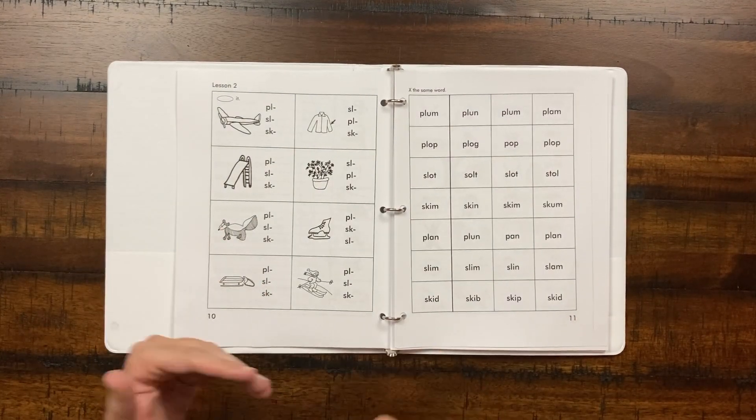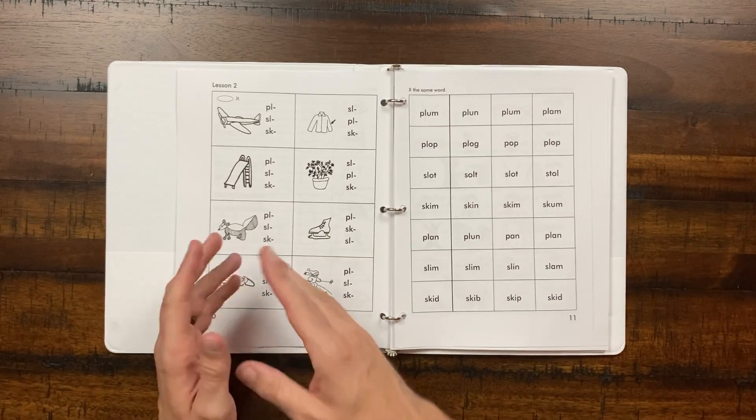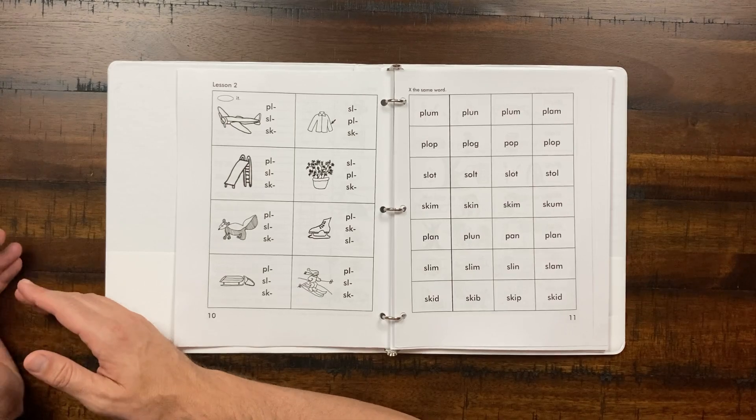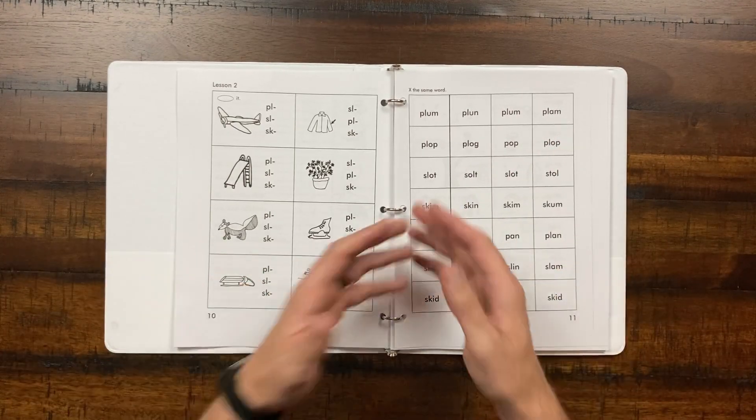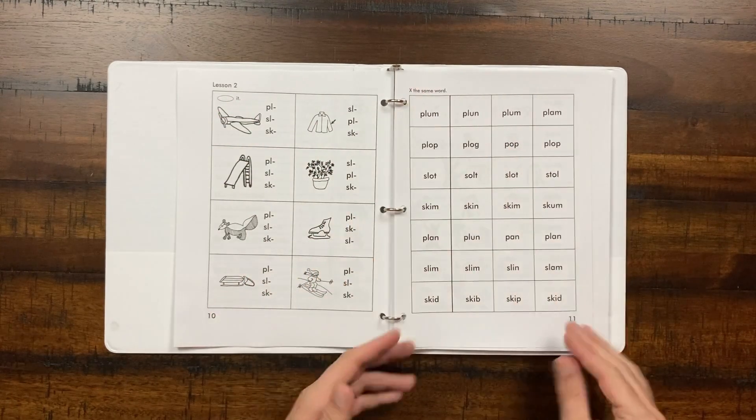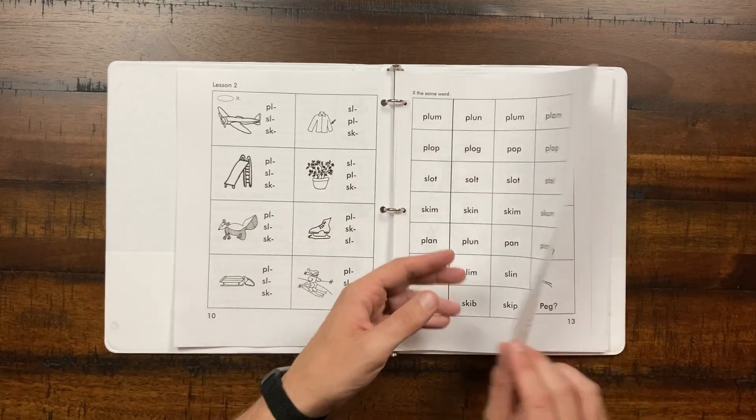So let's go ahead and look at lesson two. Again, continuing to work with these kind of prefix letter combos, and using those with the vowels that we had learned in level one. And we're just adding additional combos and making more complex words. Again, you can see the repeat that you're seeing from the previous lesson. Here, you're seeing the same activities, but obviously different content.